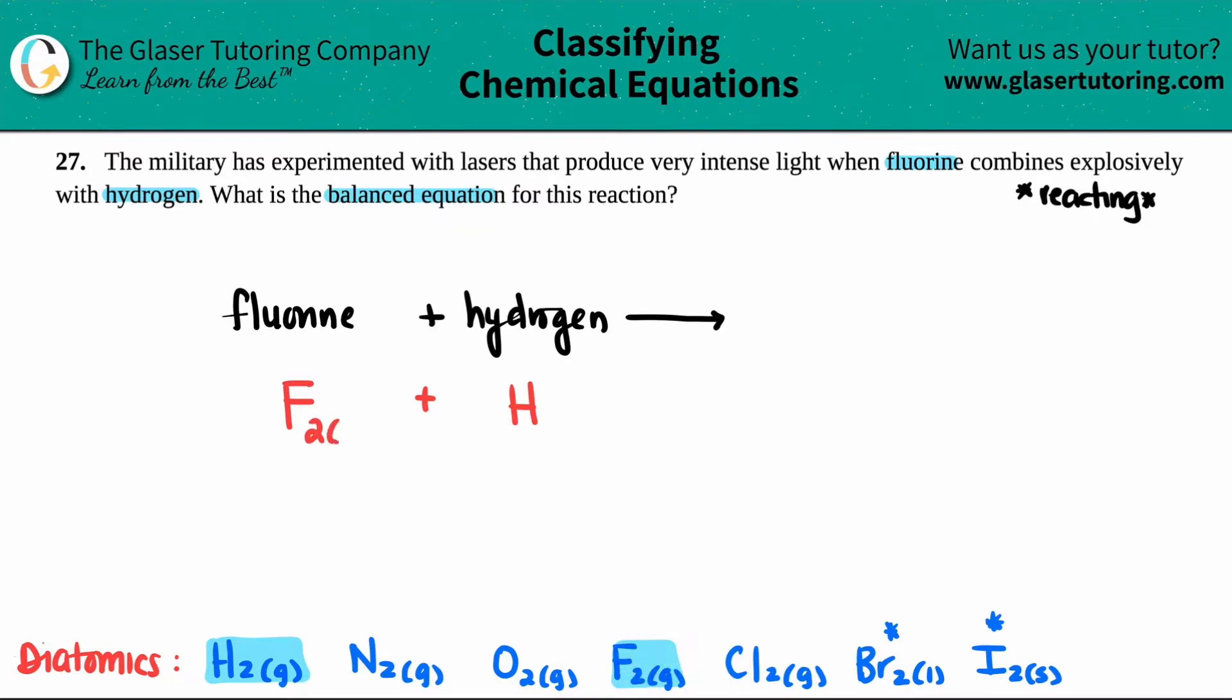And they now are forming a product. Well, what product are they forming? This is a formation reaction, mainly because I have elements, just all lonely, and they're going to fuse together. They're going to form a compound. And when we form a compound, we use the charges on the periodic table.